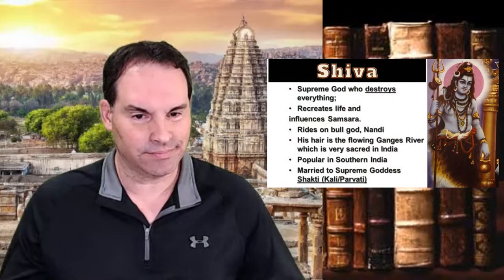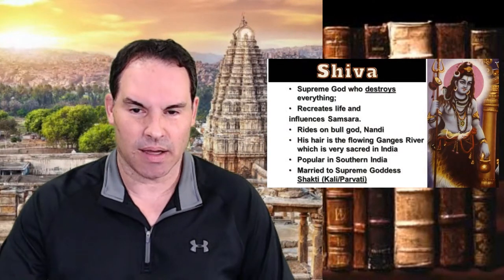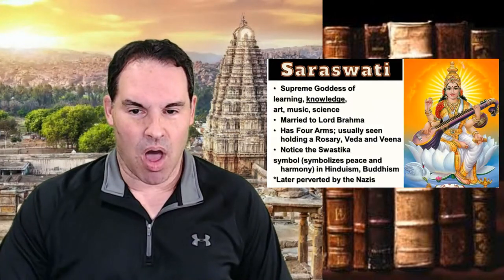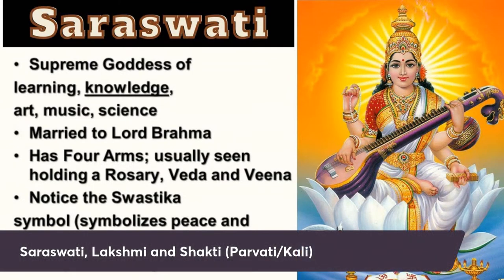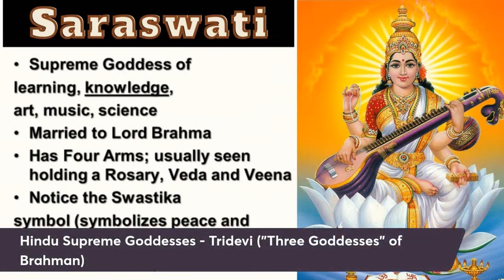Those are the chief gods — the three supreme male gods most famous in Hinduism. Now let me talk about the different supreme goddesses. They are Saraswati, Lakshmi, and Shakti — although Shakti has variations like Kali or Parvati. They have a name for the Hindu supreme goddesses: sometimes called Tridevi, which means 'the three goddesses' of Brahman. They represent different attributes.